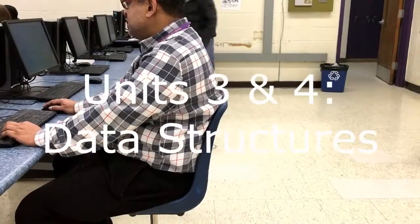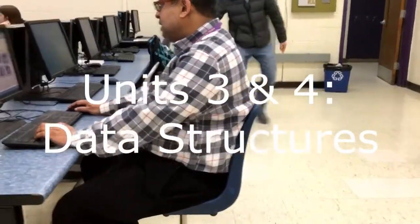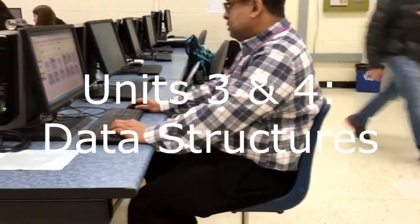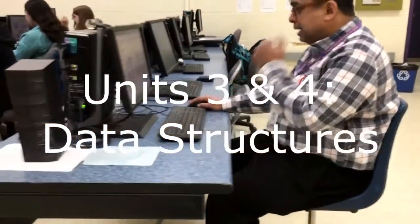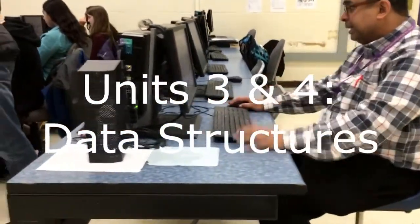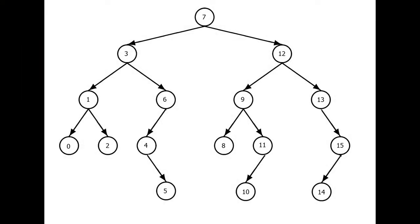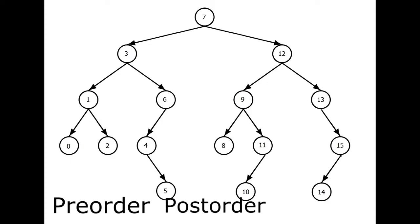Units 3 and 4 begin our in-depth discussion of data structures, the largest topic covered by this course. We will learn how to traverse binary trees such as the one you see here in three separate ways: pre-order, post-order, and in-order.